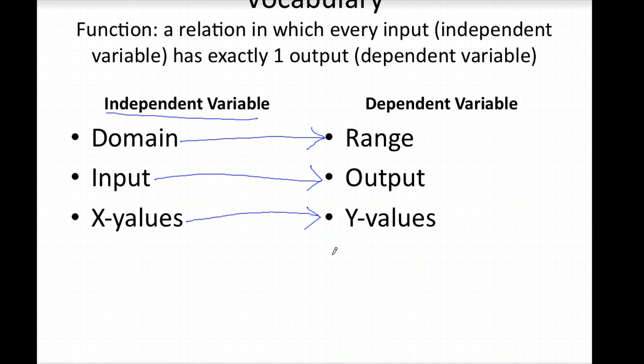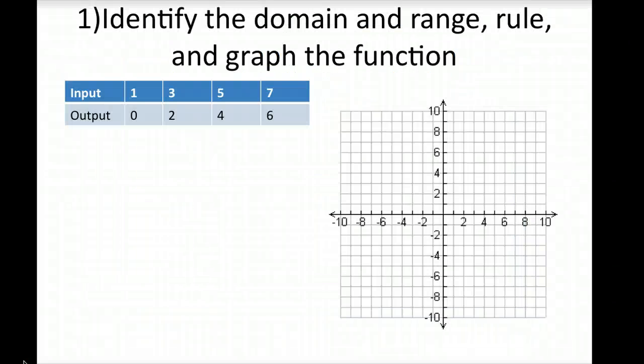Alright, let's jump into our first problem. So we are going to identify the domain and range of this function. Now, our domain, once again, are our input values. So, our domain here is the set 1, 3, 5, and 7. And we'll put brackets on either end. You want to make sure you're going in increasing order, from smallest to greatest.